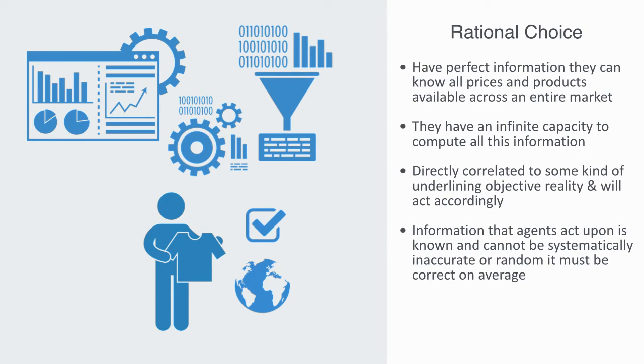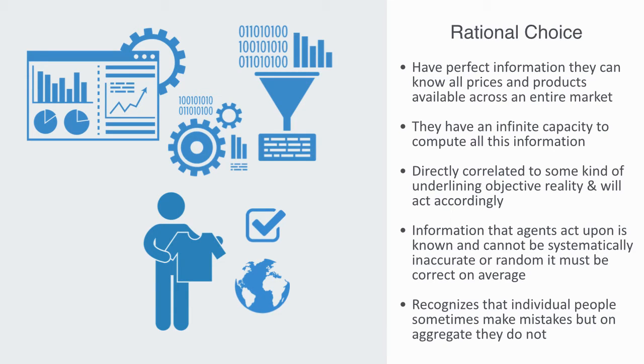It must be correct on average. An important thing to note here is that standard economics does not say that individuals never make mistakes. It recognizes that individual people sometimes make mistakes, but states that on aggregate they do not.